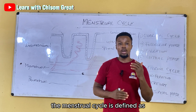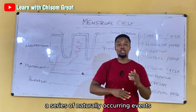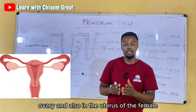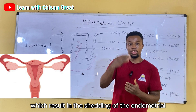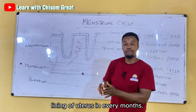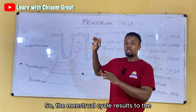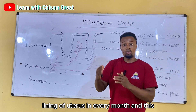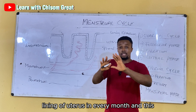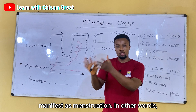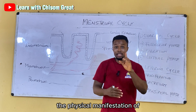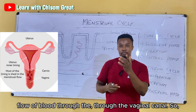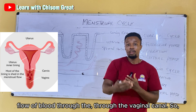The menstrual cycle is defined as a series of naturally occurring events or cyclic changes in the ovary and also in the uterus of the female, which results in the shedding of the endometrial lining of the uterus every month. This shedding manifests as menstruation — the physical manifestation of the menstrual cycle at the end of the month — which is the flow of blood through the vaginal canal.